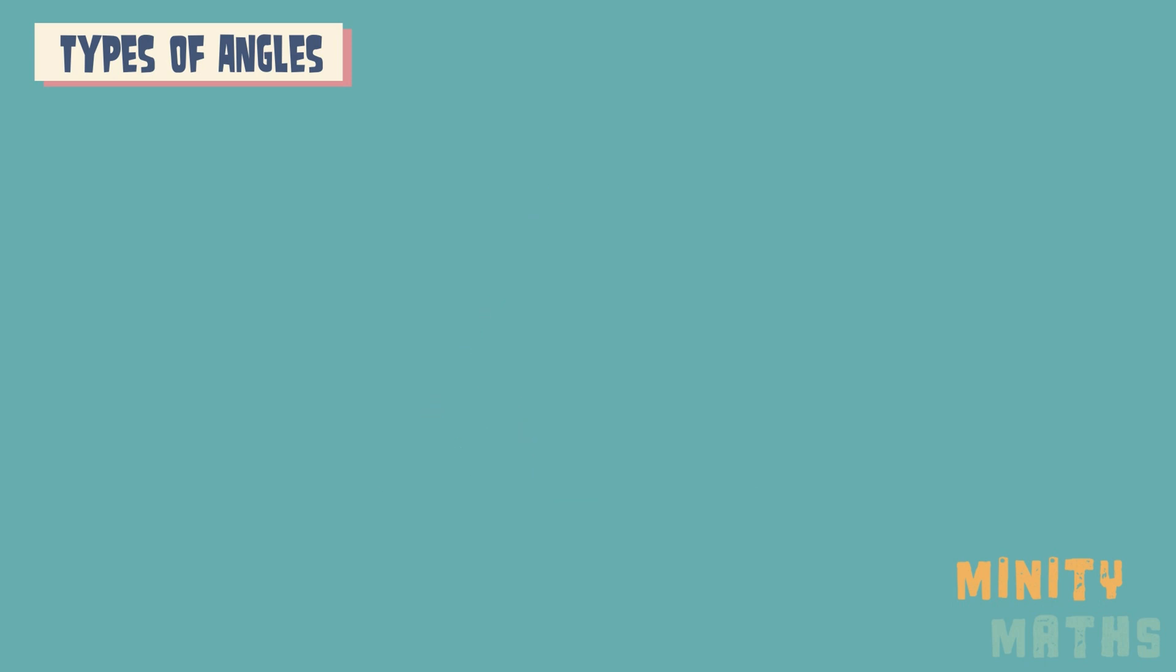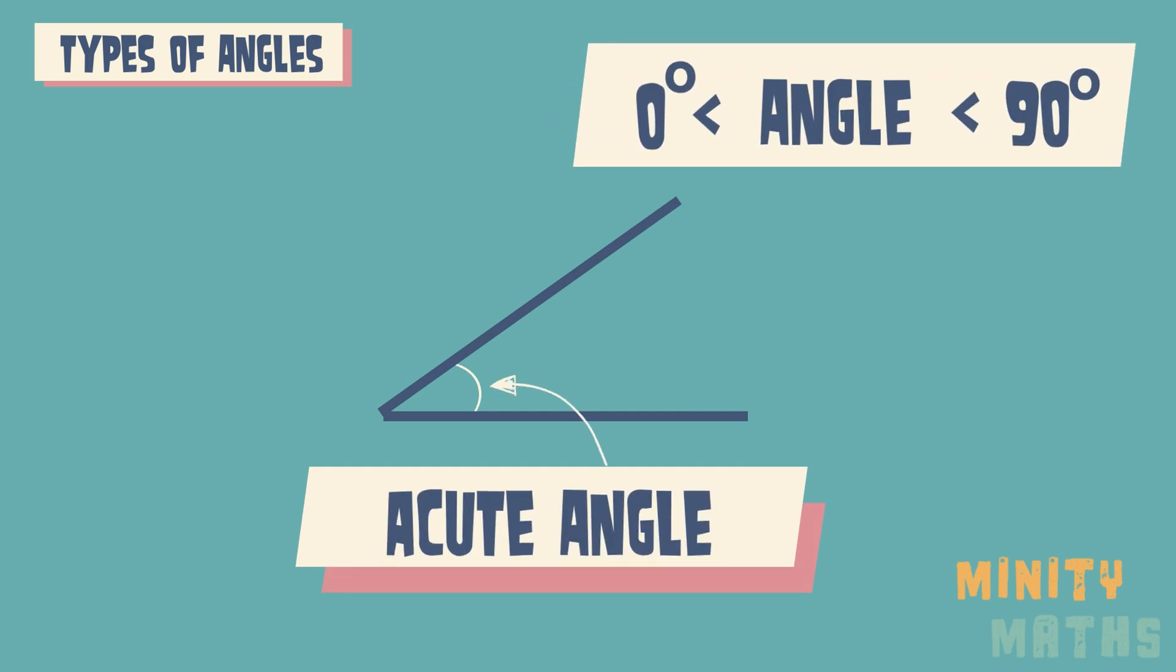There are different types of angles. Acute angles are angles which are greater than zero and less than 90 degrees.